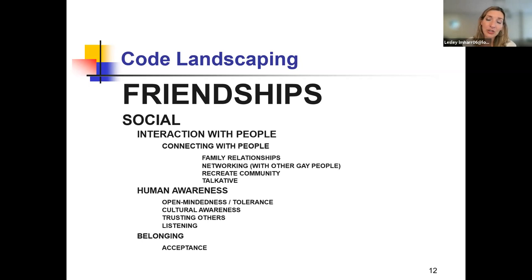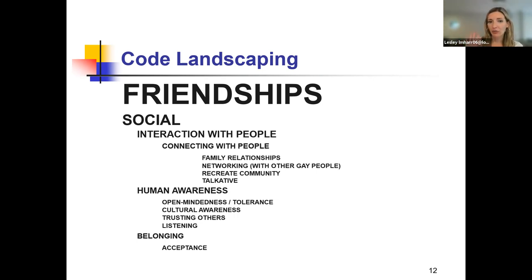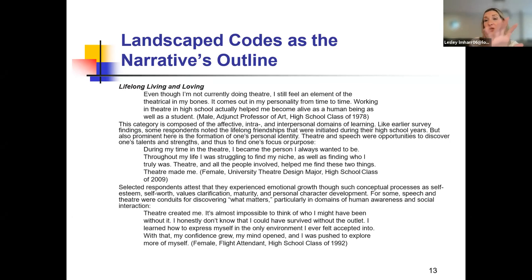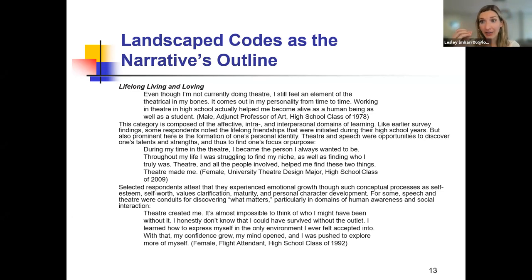Code landscaping is great because sometimes this helps you fit your codes into themes. You can see the mega theme here is friendships. Within that, the researcher looked at the social nature of friendships, and from within that tried to characterize it as interaction with people, human awareness and belonging, and then inserted codes related to that within. This is the way you can make a coding tree or, as Johnny Saldana calls it, a coding landscape. Landscaped codes as the narrative outline — that's where you can take your code landscape and plug in your interview data or your direct quotes to define that code and ground it in data using your participants' very words.